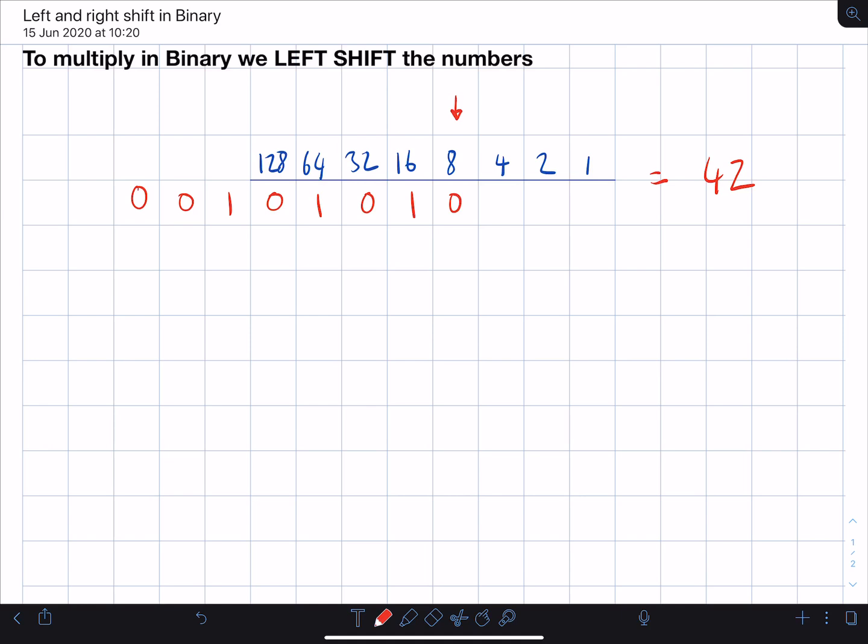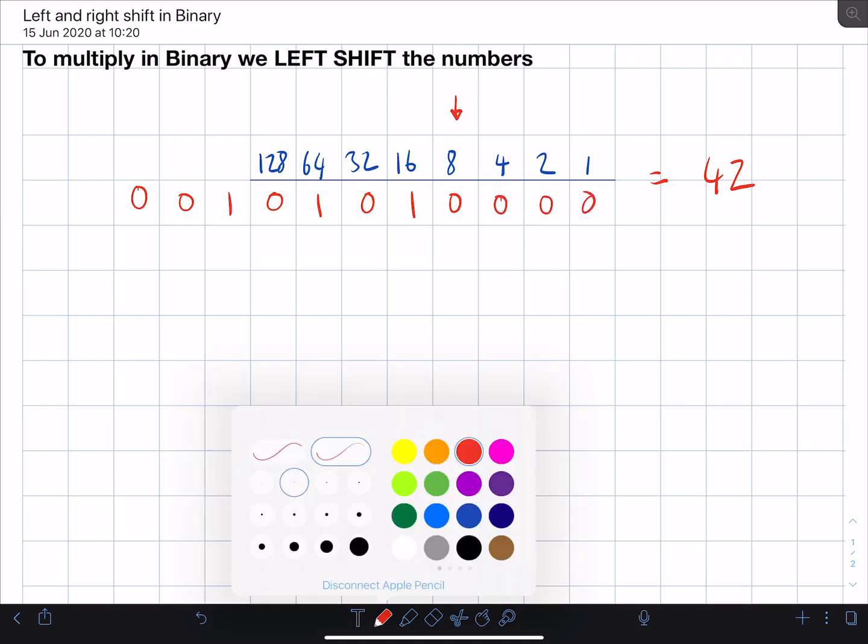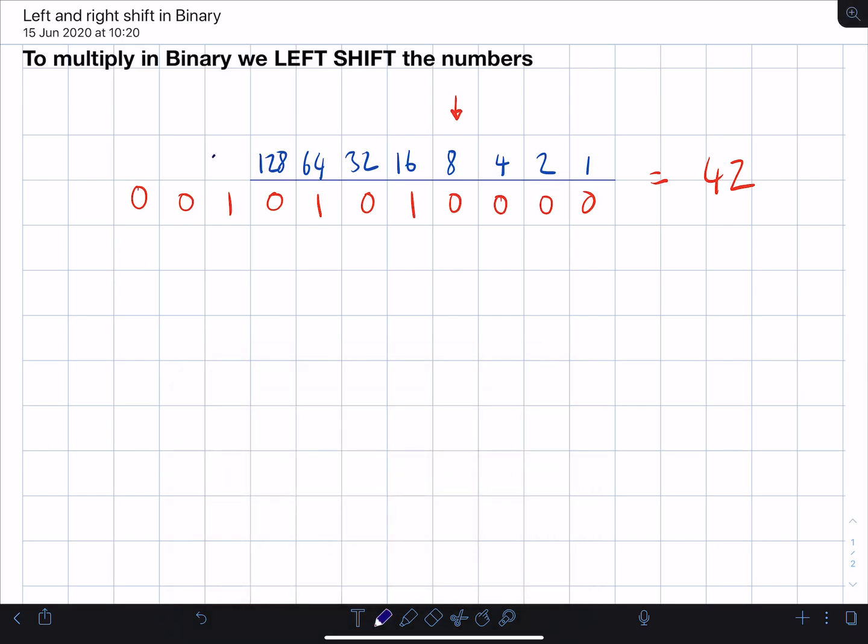So this time let's fill in the extra numbers we're missing. And you'll notice we've got a 1 that's gone off the end there. So we need to now double 128, which is 256. So let's figure out what this number is. 42 times by 8 gives us 336. So let's add these binary numbers up and see if we've got that. 256 plus 64 plus 16 gives us 336.